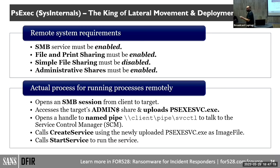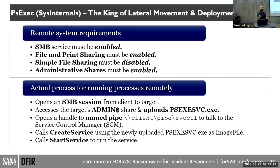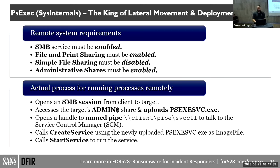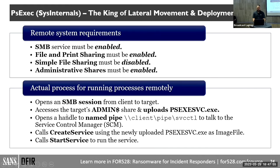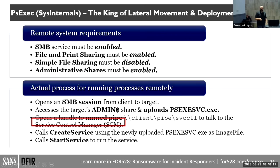What happens first: an SMB session is opened to the admin dollar-sign share, to which psexesvc.exe is actually uploaded. From there, a named pipe is opened to the service control manager. The service control manager is told: 'I'd like you to make a new service and use that file I just uploaded as the handler, and run it now.' When that service runs, named pipes are created in memory. Those pipes are used for inter-process communication (IPC) and allow bidirectional communication between the two hosts.